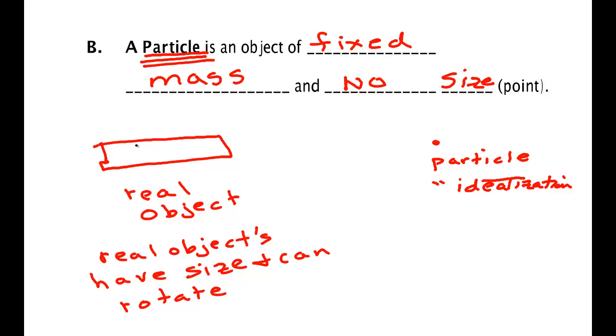So if I want to say where this object is located, do we mean where this is located? Or do I mean this part of it, or this part of it, or this part of it? What do we mean by the location of the object?